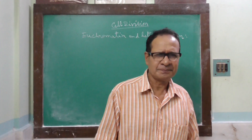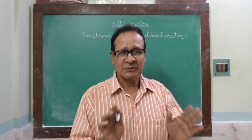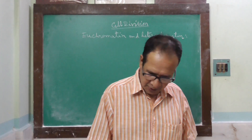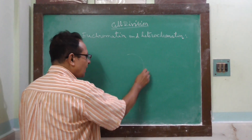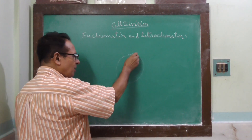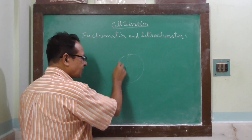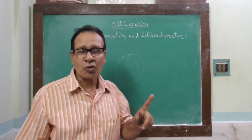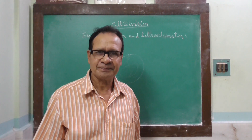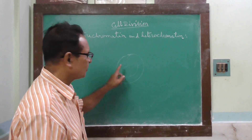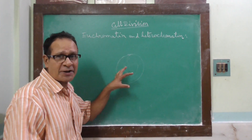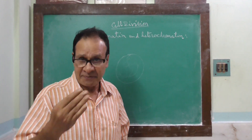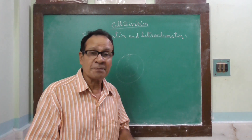We come to the topic of euchromatin and heterochromatin. Inside the nucleus, fine thread-like structures are present, which we call chromatin threads. If we stain this nucleus — that is, the resting nucleus, or nucleus present at interphase — with basic dye,